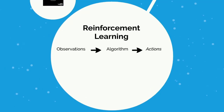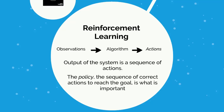Let's jump over to reinforcement learning. Reinforcement learning doesn't really fall into supervised or unsupervised learning — sometimes it's called semi-supervised learning or Q-learning. In reinforcement learning, we have our observations as inputs, our algorithm, and as a result we produce a sequence of actions. The output isn't a class or a number, but a combination of actions that allow us to reach our goal. Each individual action isn't as important as the policy — the sequence of correct actions to reach the goal.